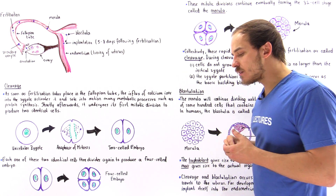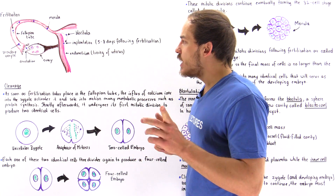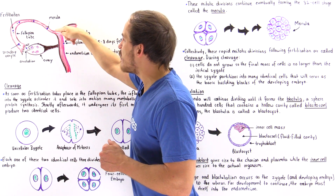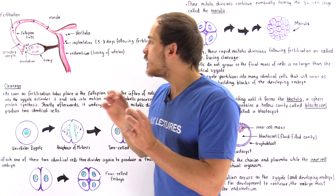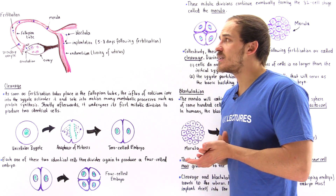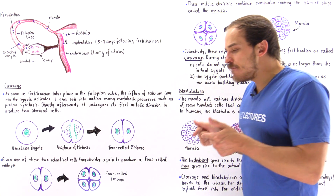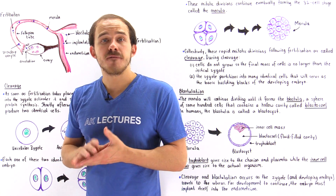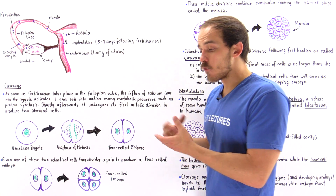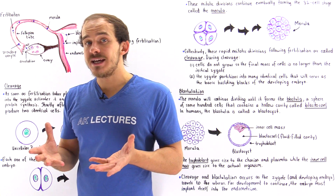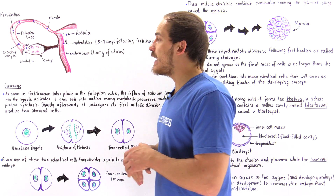Now suppose this individual undergoes sexual intercourse so that sperm cells are deposited into the vaginal cavity. From there, those sperm cells move into the uterus and eventually make their way into the fallopian tube. At the thickest portion of the fallopian tube, a single sperm cell combines with the secondary oocyte — this is fertilization. Following fertilization, there is an influx of calcium ions into the cytoplasm of the zygote, which initiates the cortical reaction, forming a membrane impermeable to additional sperm cells.